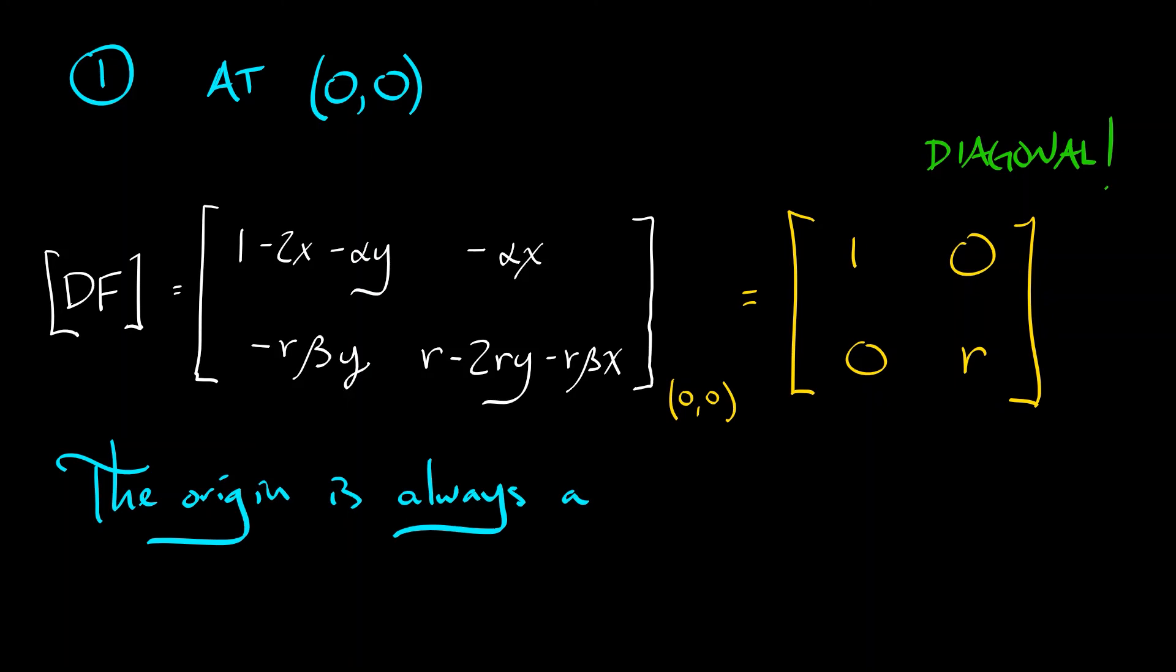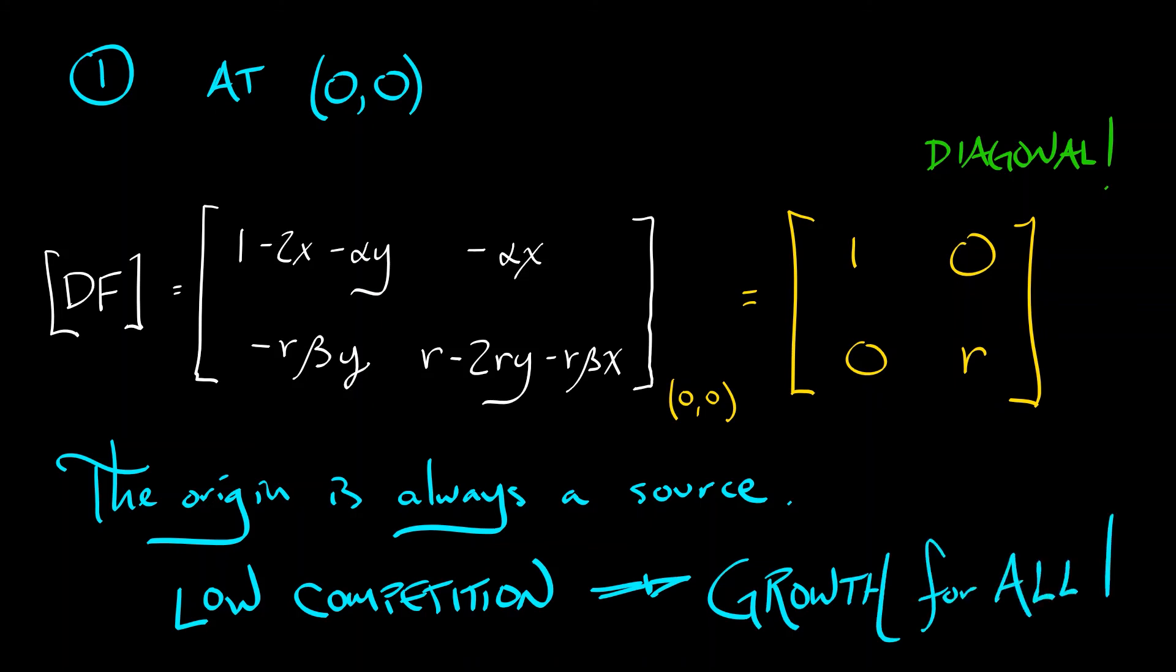Now let's interpret that. What this means is that when competition is low, when the population sizes of both teams is low, there's plenty of growth for everybody. Everybody's just going to be increasing in size. Whether we're talking about humans and robots or whether we're talking about two startups working in the same space.